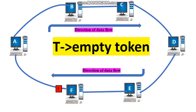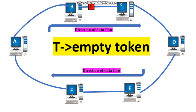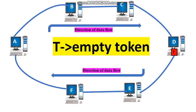If any station does not want to send data, then it will simply pass the token to the next station. Passing the token means receiving the token from the preceding station and transmitting it to the successor station. In token ring, the data flow is unidirectional, that is, in the direction of the token passing.